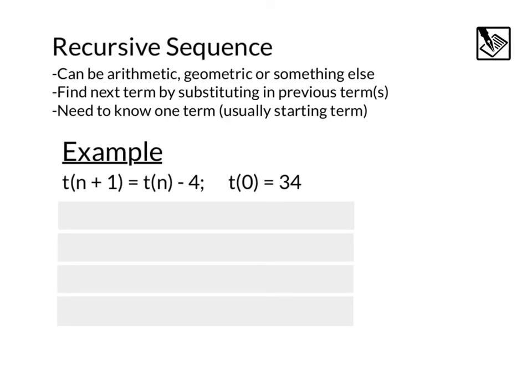Continuous means that we have values all throughout the whole graph. Our last type of sequence is a recursive sequence. And these can actually be arithmetic, geometric, or something else. What makes it recursive is that we find the next term by substituting in previous terms. And we usually need to know one term, and usually that's the starting one.